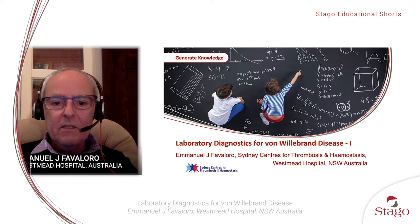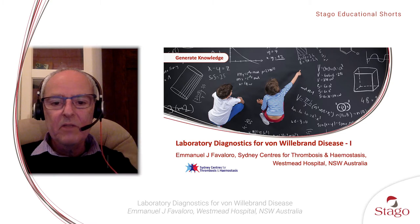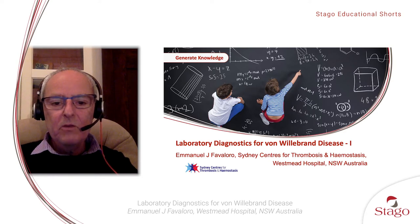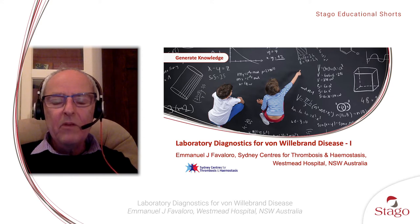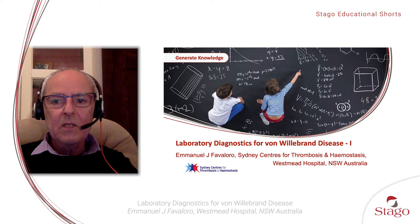I'd like to thank Stego for inviting me to speak on von Willebrand's disease, which is my favourite topic — in particular, laboratory diagnostics for von Willebrand's disease. My name is Emanuel Favaloro. I'm from the Sydney Centre for Thrombosis and Haemostasis at Westmead Hospital in New South Wales, and I'm happy to provide a copy of any of the material that I speak about in this presentation to anybody who requests it. Just send me an email.